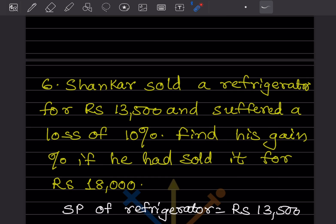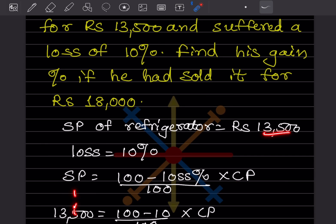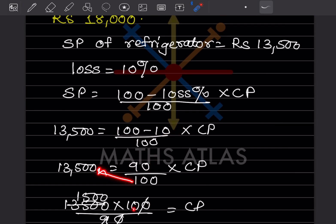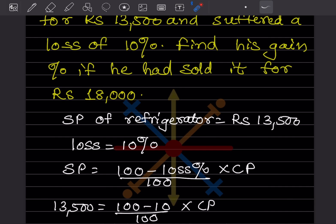Next problem: Shankar sold a refrigerator for ₹13,500 and suffered a loss of 10%. Find his gain percentage if he had sold it for ₹18,000. Using SP = (100 − Loss%) ÷ 100 × CP: 13,500 = 90/100 × CP. Solving, CP = 13,500 × 100 ÷ 90 = 1500 × 10 = ₹15,000.